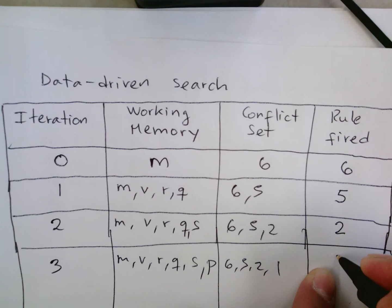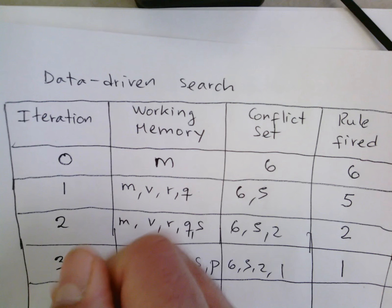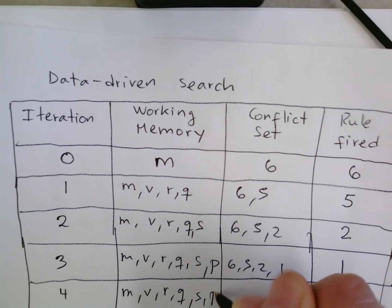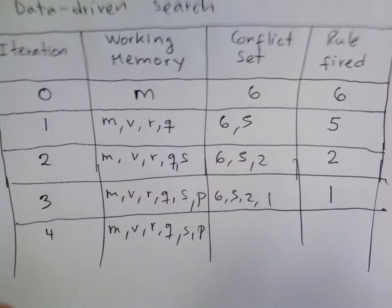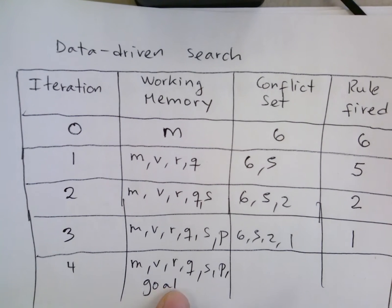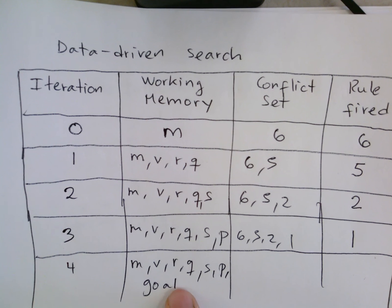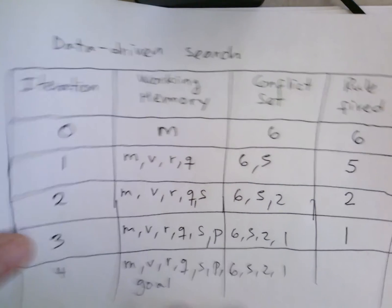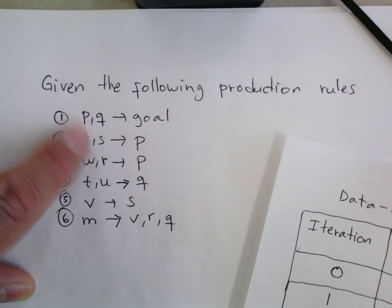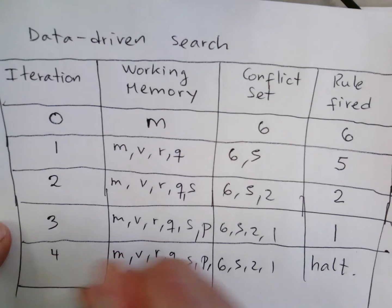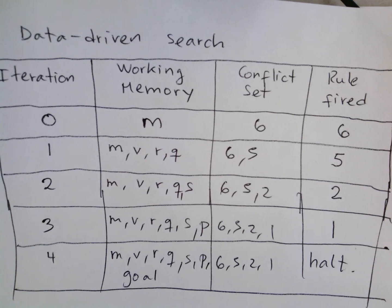The next rule to execute is rule one. On the next iteration we have Q, S, P, and when we fire rule one we are adding the goal. As soon as we reach the goal we are ready to make a conclusion and finish the problem. We halt, and that ends the data-driven search.